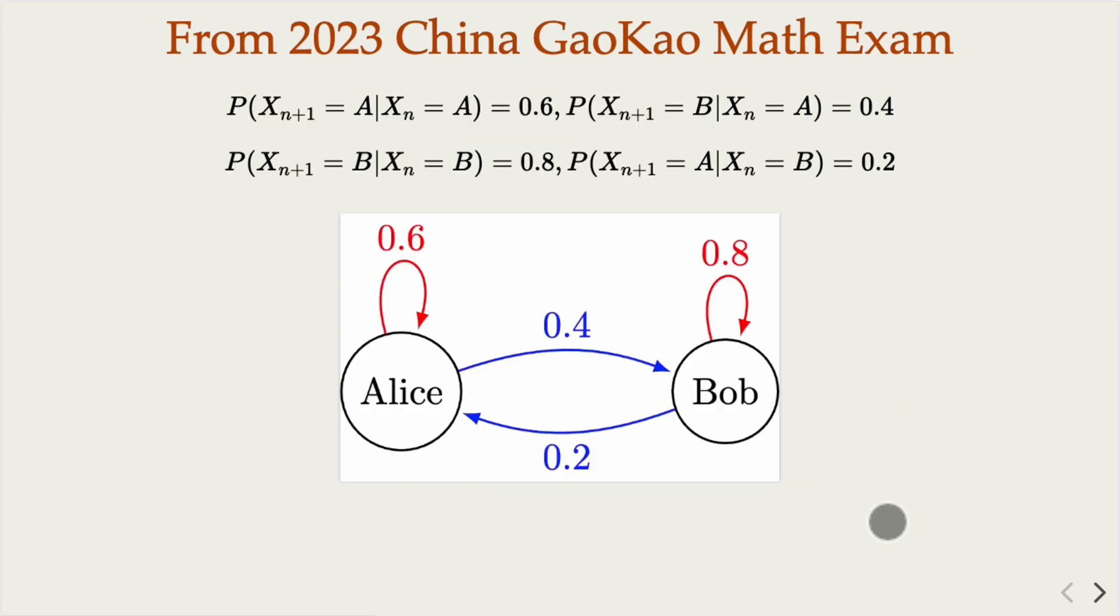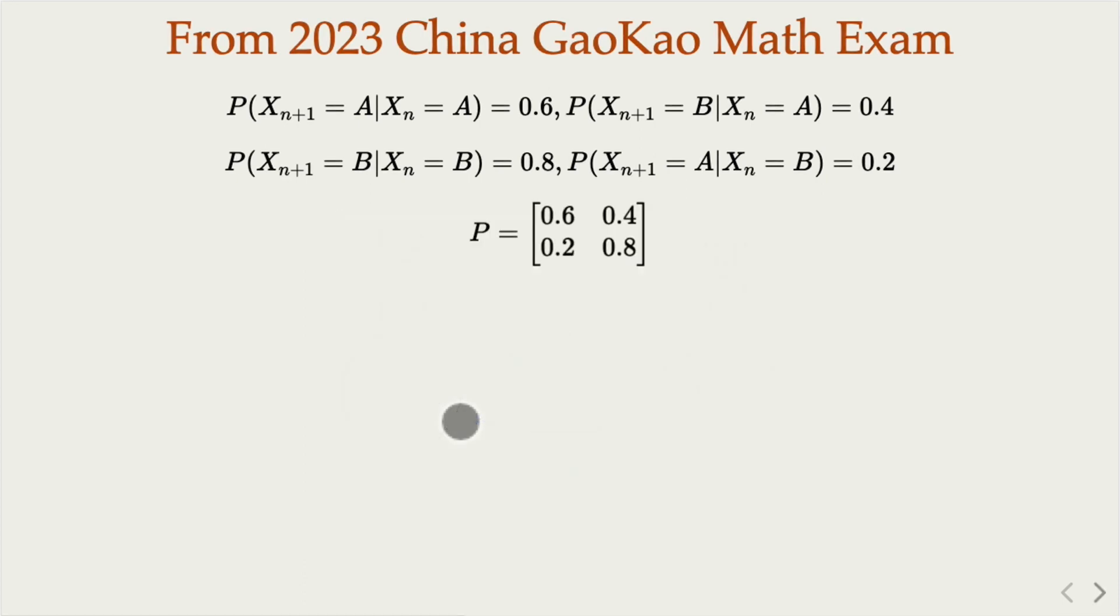In general, this is the transition diagram for the Markov chain. In this particular case, Alice would have 0.6 chance to continue to play and 0.4 to switch to Bob. When it's Bob's turn, there would be 0.8 chance to continue playing or 0.2 to switch to Alice. That's the transition probability.